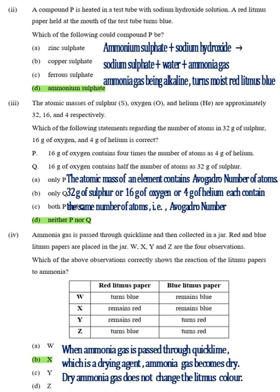Part 4, Answer B. When ammonia gas is passed through quicklime, which is a drying agent, ammonia gas becomes dry. Dry ammonia gas does not change the litmus color.